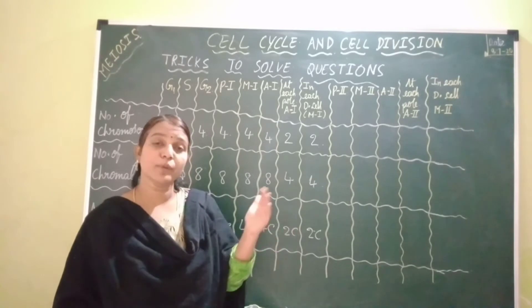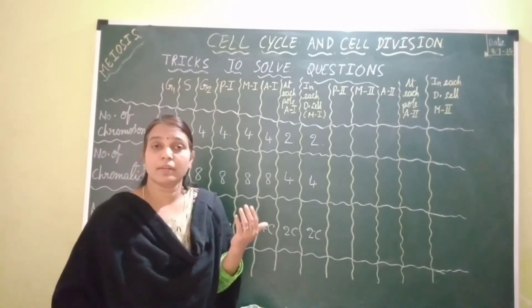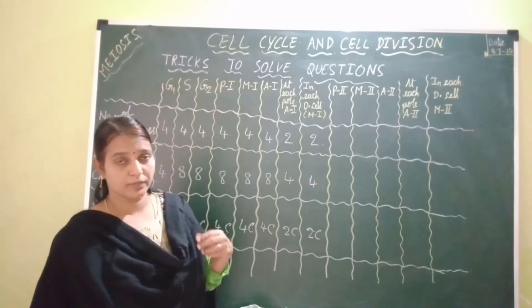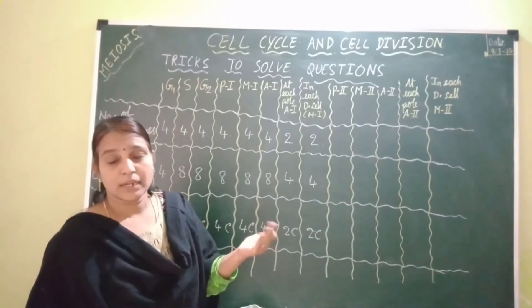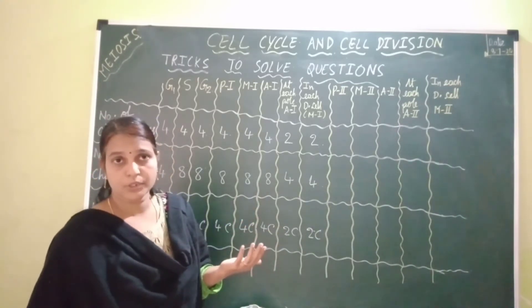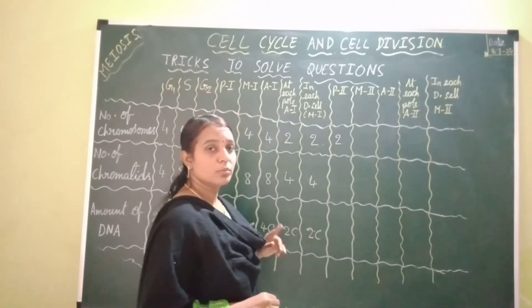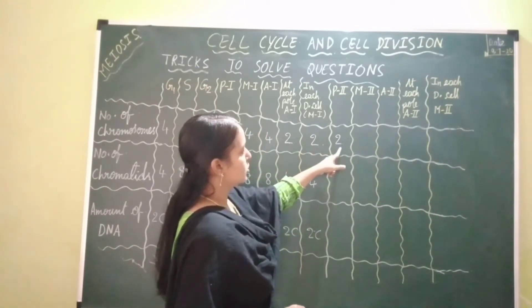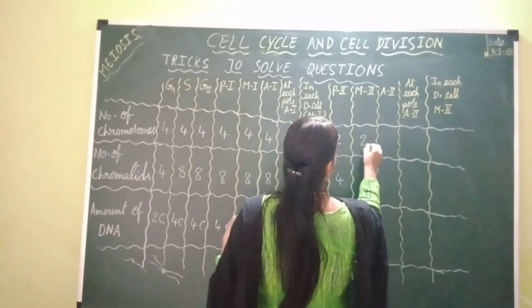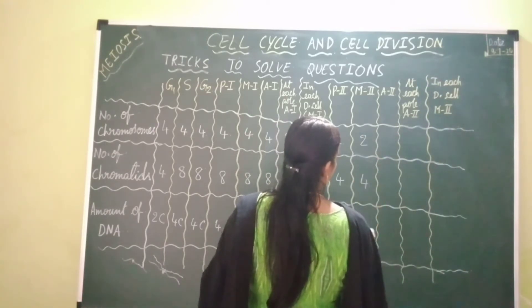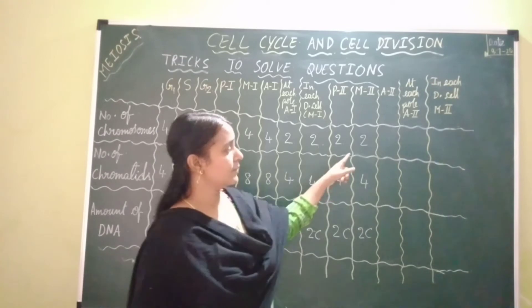The two daughter cells of meiosis 1 become the parent cells of meiosis 2. Before entering meiosis 2, they undergo a preparatory phase called interkinesis, which we studied in detail in the previous video. After interkinesis, both cells enter meiosis 2 — prophase 2 first. In prophase 2 each cell has two chromosomes, four chromatids, and 2C DNA. Metaphase 2 also has two chromosomes, four chromatids, and 2C amount of DNA.